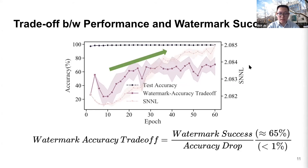On MNIST, we observed an accuracy drop of within one percentage point and a watermark success of about 65%. We observed competitive performance on other datasets such as CIFAR-10. In our paper, we describe how this can be used to verify the watermark using very few queries.